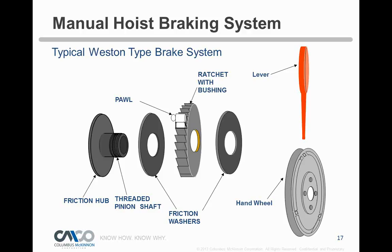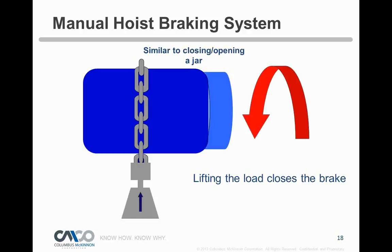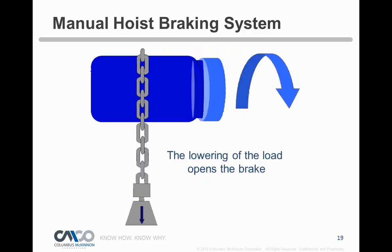As you raise the load you tighten down a pinion shaft, creating essentially a solid gear that holds the load via friction and the ratchet pawl. When lowering, a small gap is created to control the descent, and as soon as you stop it re-engages and holds the load. I describe the Weston brake in class using a Ball canning jar as an example — as you tighten it, the jar turns in your hands; as you lower, it comes down and self-locks.